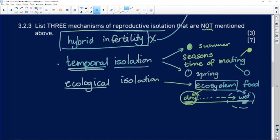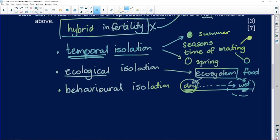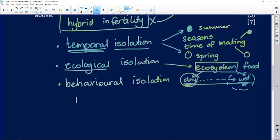A third mechanism would be behavioral. And we often see this happening, behavioral isolation. So this could happen, for example, when the one species has a certain mating call.